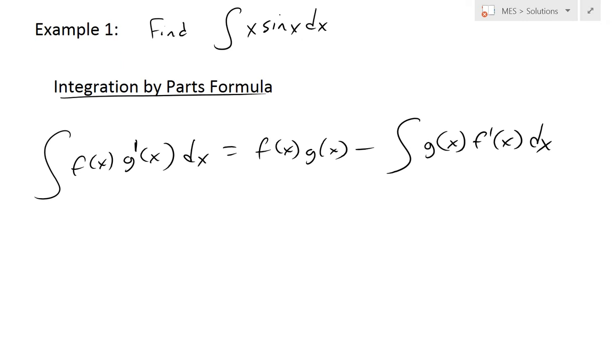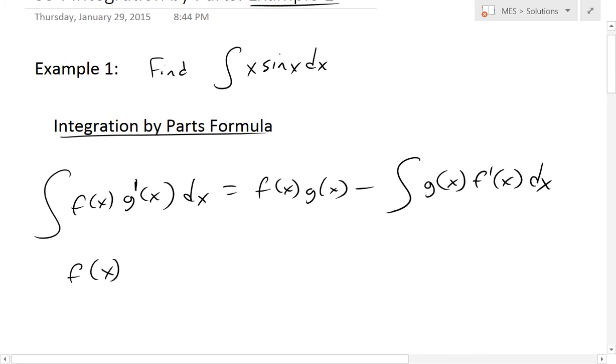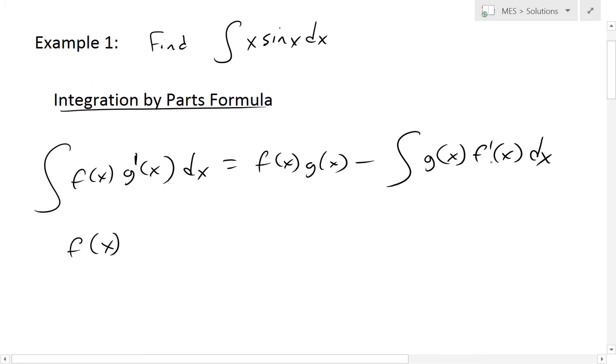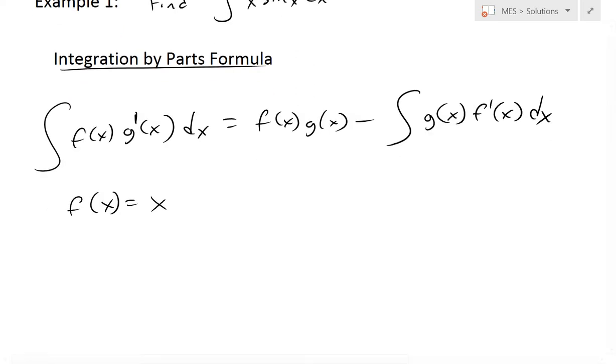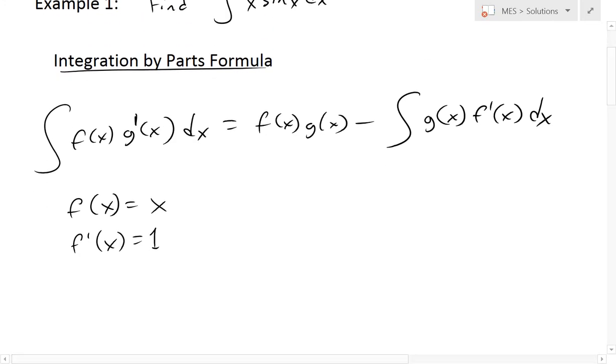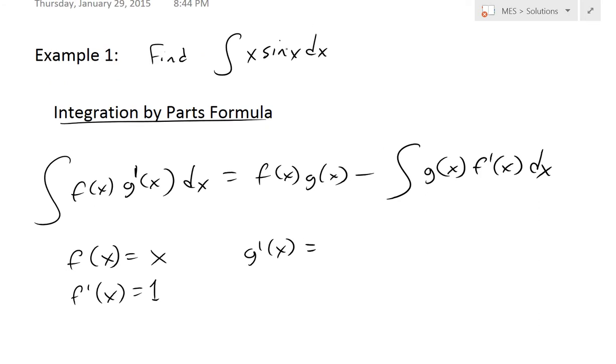The idea is selecting f(x) and g'(x) such that we get a simpler integral. We have to select between x and sin(x). In this case, we're going to be taking the derivative on the right side of f, so we want it to be simpler. That's why we would choose x, because the derivative is going to be equal to one. So we want to simplify f(x) or the derivative of f(x).